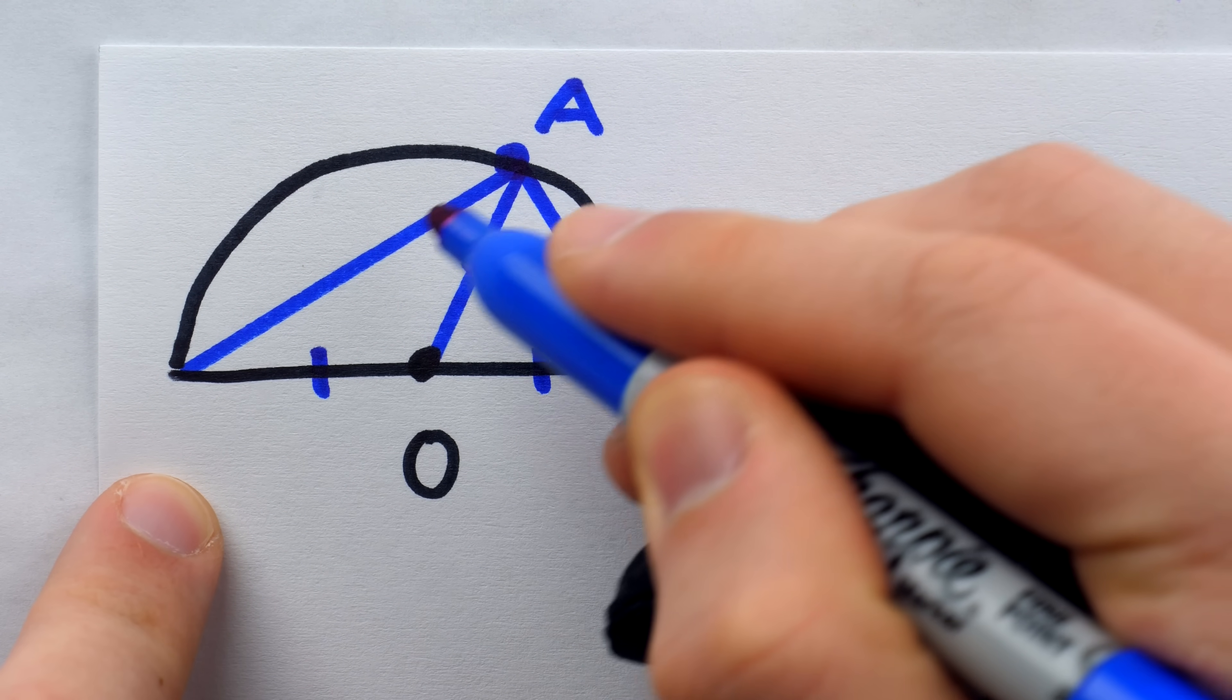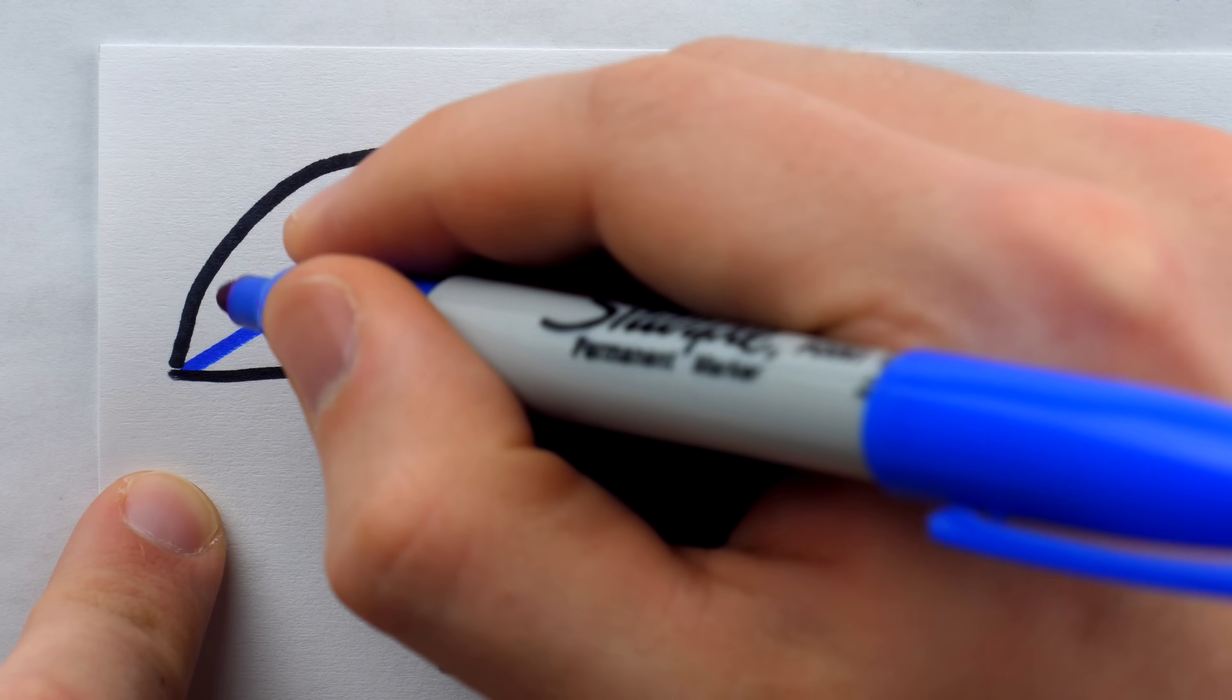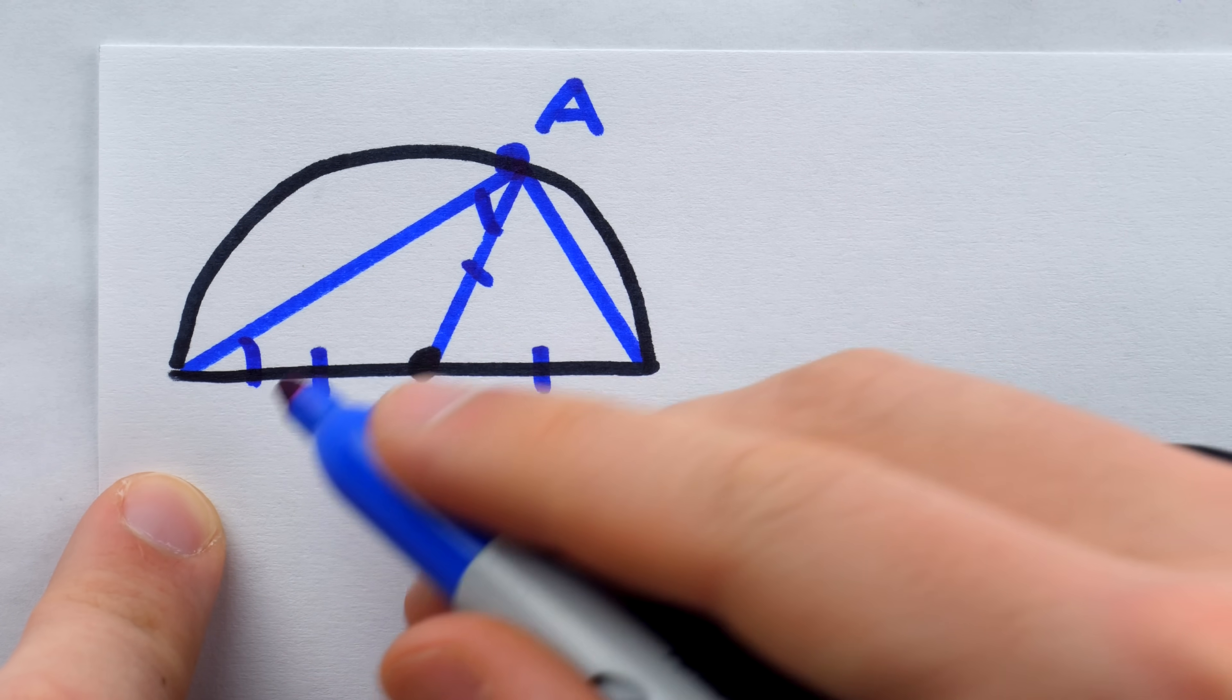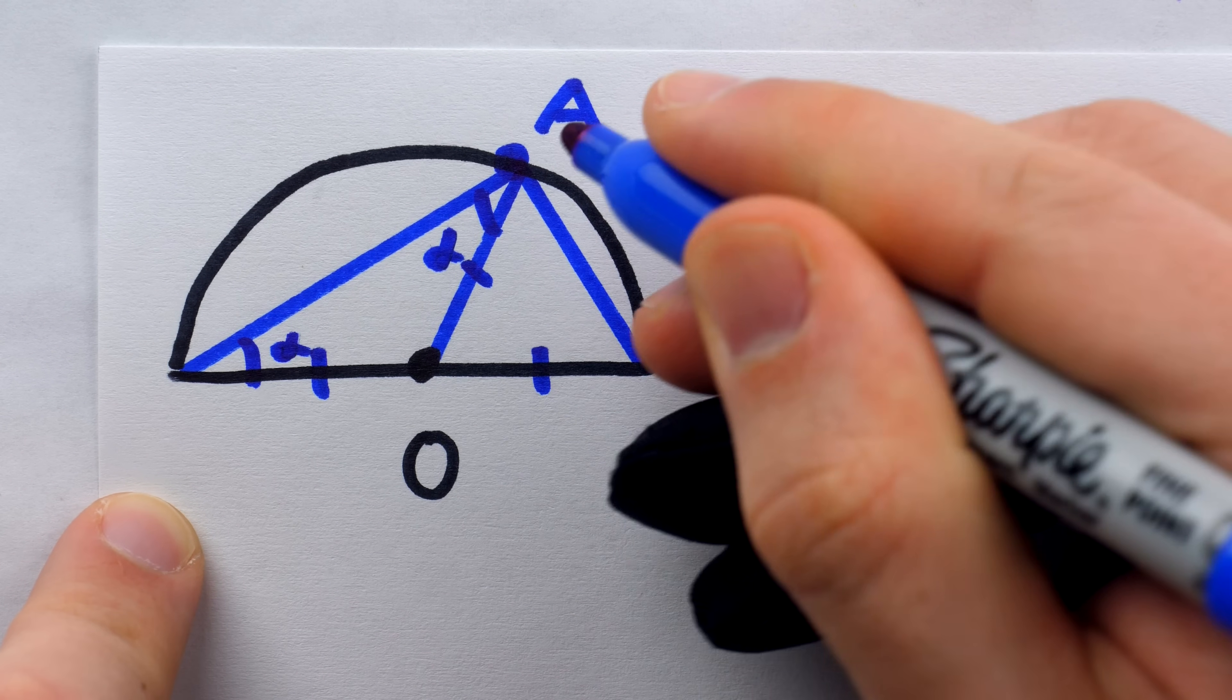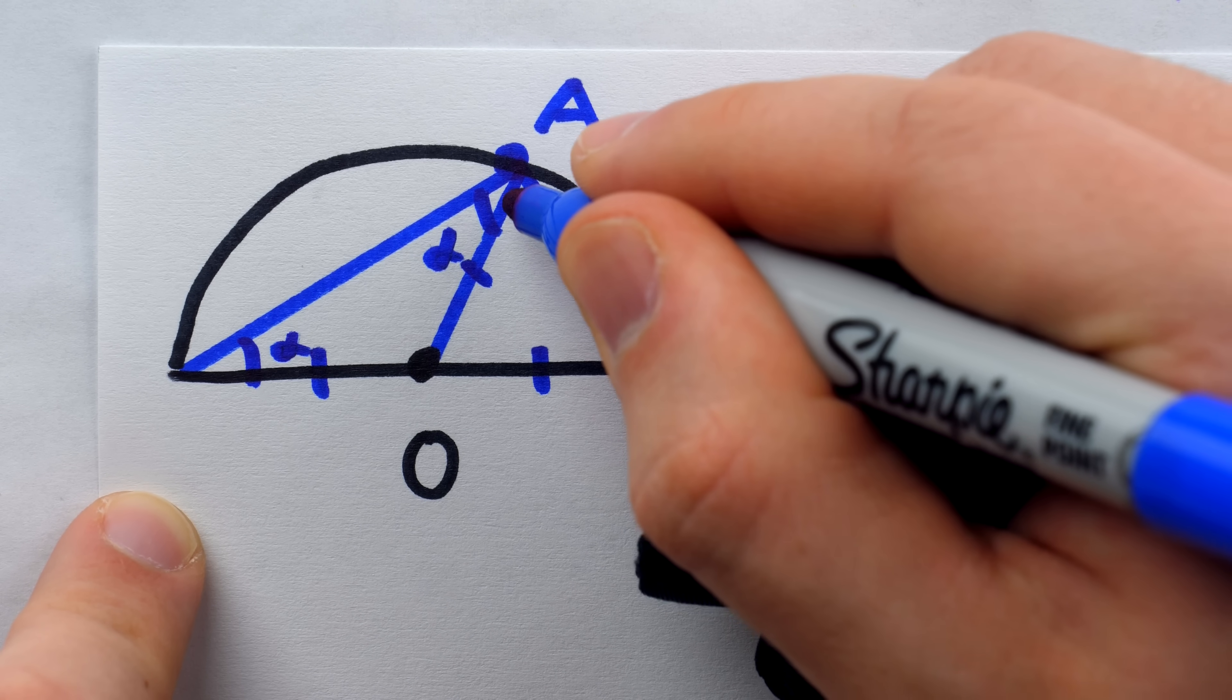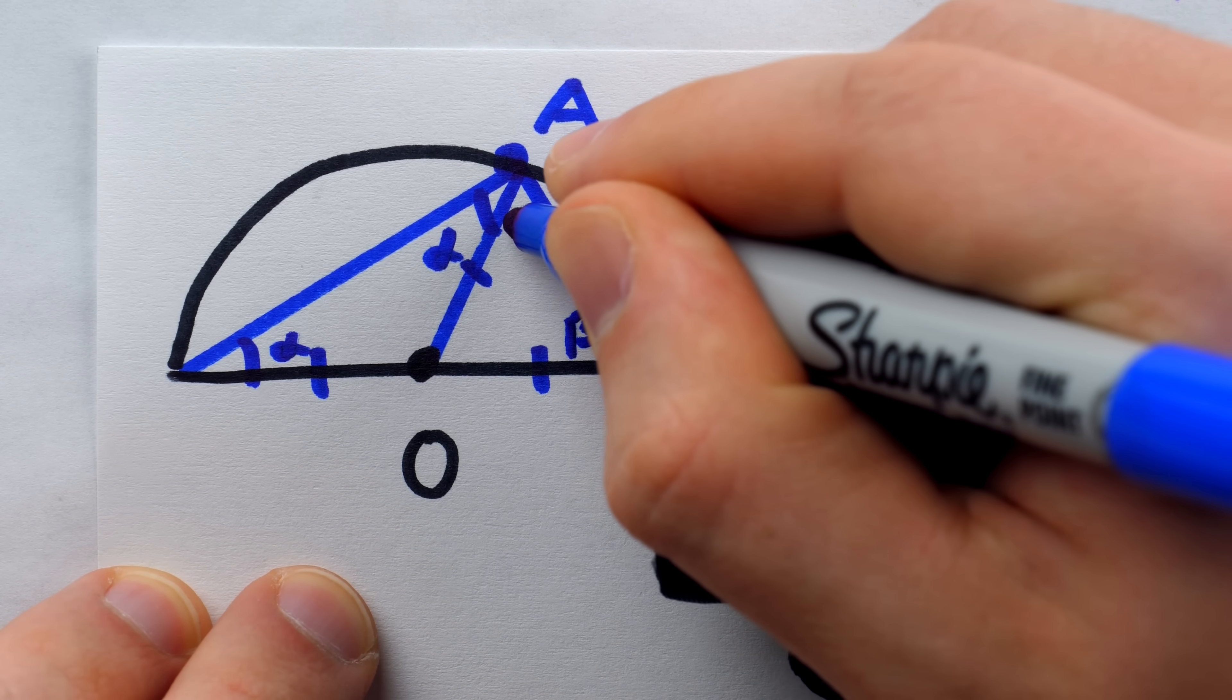So we have an isosceles triangle here, which Thales had previously proven would have congruent base angles. This angle and this angle, those which are opposite the congruent sides, must have the same measure. Perhaps we call both of those alpha. Similarly, over here we have an isosceles triangle. Congruent sides, so as Thales knew, those base angles had to be congruent. Let's say they had measures of beta.